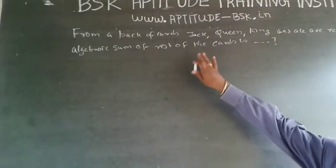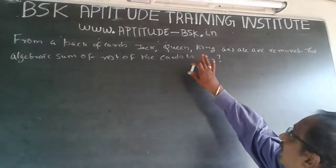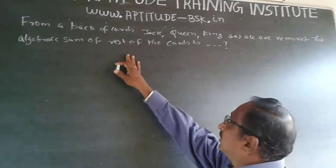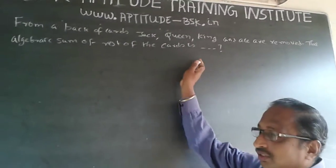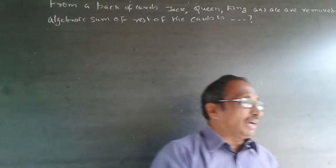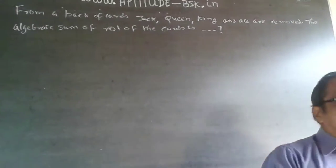The question is from a pack of cards: Jack, Queen, King and Ace are removed. The algebraic sum of rest of the cards is? So, I think all of us know a class pack will be having 52 cards. I am not talking about the guarantee card or the jokers - it is 52 cards and there are four designs.